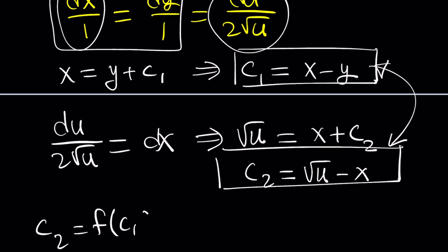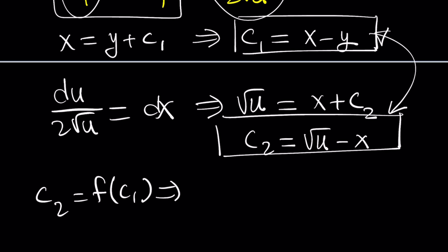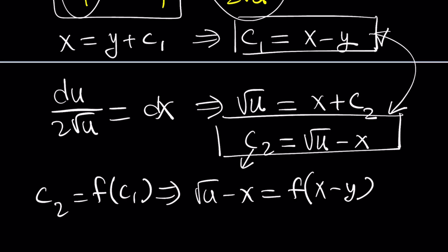Maybe you can tell me more about it. So, c sub 2 is a function of c sub 1. And from here, we can write the following. What is c sub 2? Root u minus x. What is c sub 1? x minus y. So, in other words, we're saying that root u minus x, which is c sub 2, is a function of x minus y, which is c sub 1. Make sense? Easy, right? Straightforward.